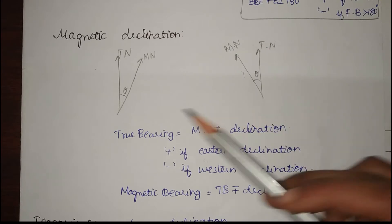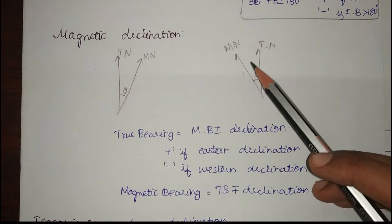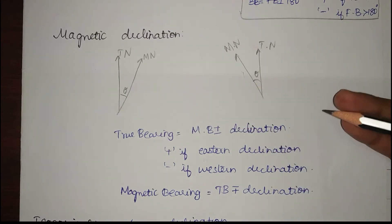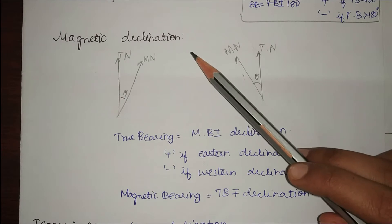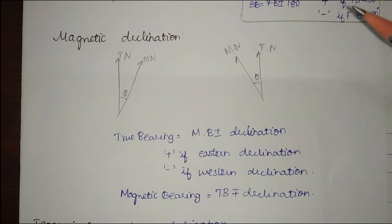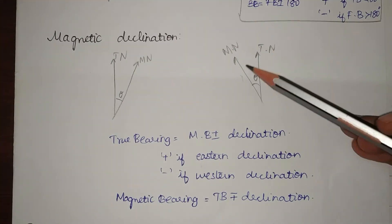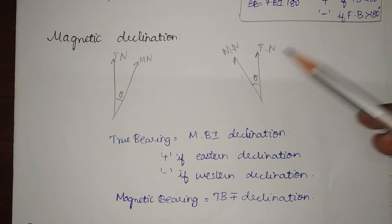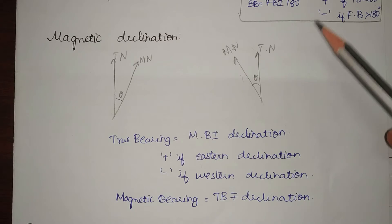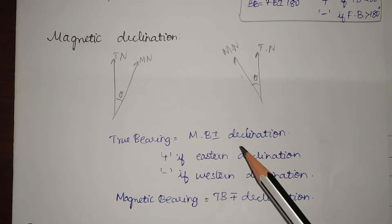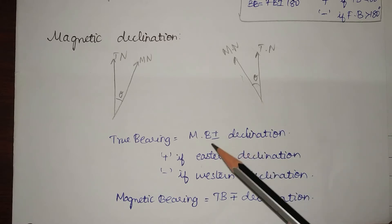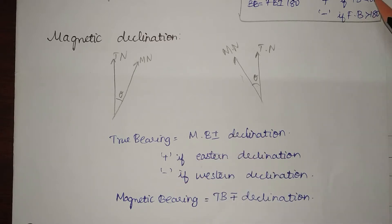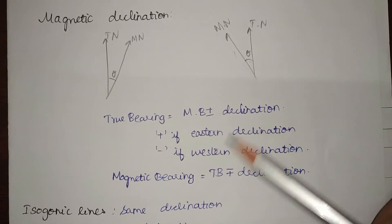Next, magnetic declination. True north is always going to be constant, but the magnetic north varies depending upon your location and other local attractions. The horizontal angle between the true north and the magnetic north is called the magnetic declination. When you need your true bearing, the formula is: true bearing equals magnetic bearing plus or minus declination.